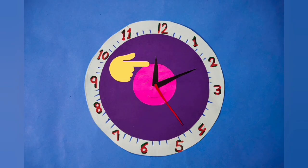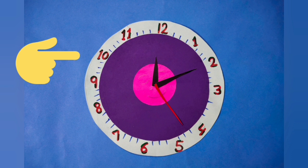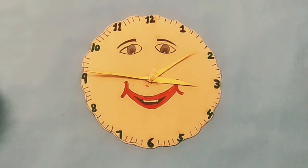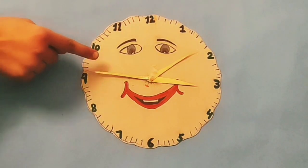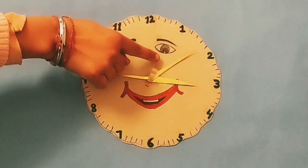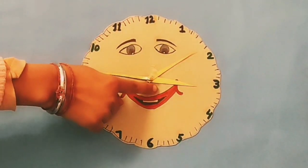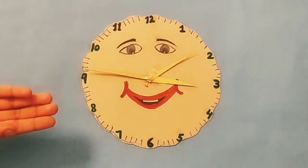Students, seconds, minutes, and hours are the units which are used to measure time. Dear students, like this, the face of a clock is divided into sixty equal parts. The time taken by the hour hand to reach from one number to another number is same as the time taken by the minute hand to complete one rotation. And second hand completes sixty rotations in that time period.